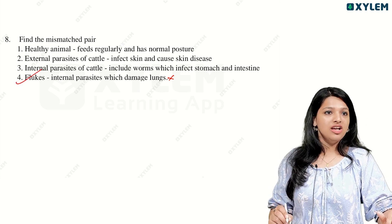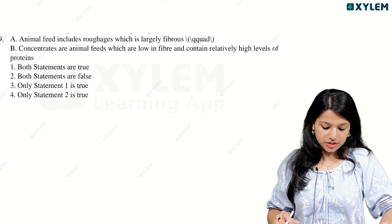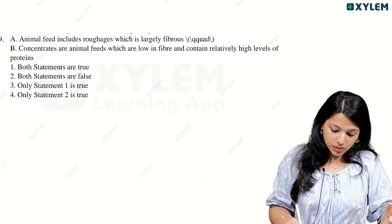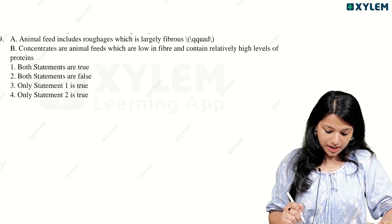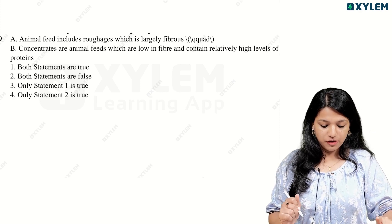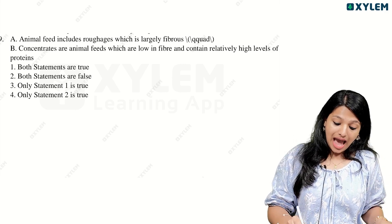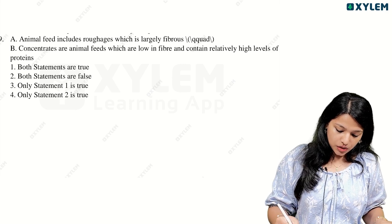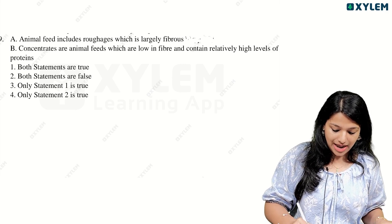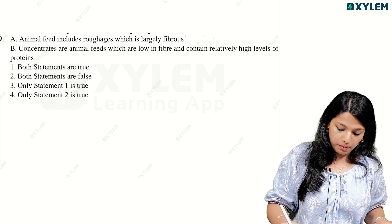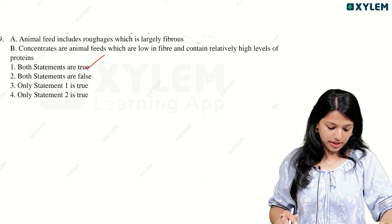Find the mismatched pair. Animal feed includes roughage which is largely fibrous. Concentrates are animal feeds which are low in fiber and relatively high in protein. Animals include roughage — this includes fibers. Concentrates: we have to choose fiber and protein, and that is not available here. Both statements are true — that is clear.